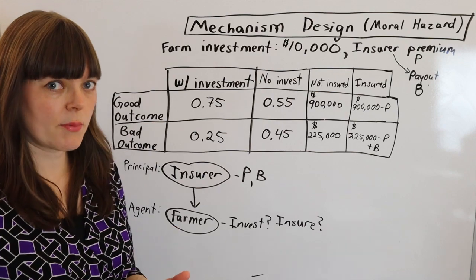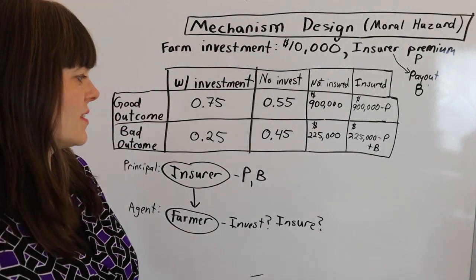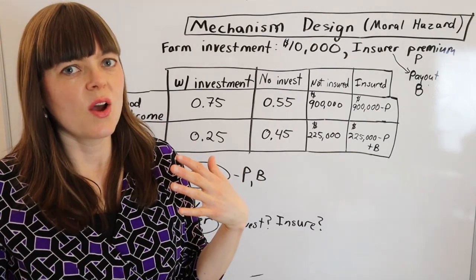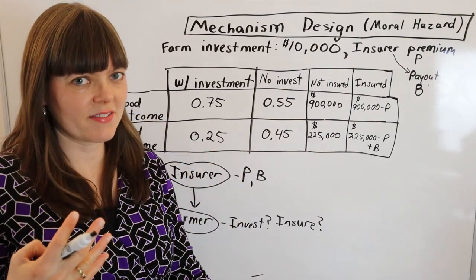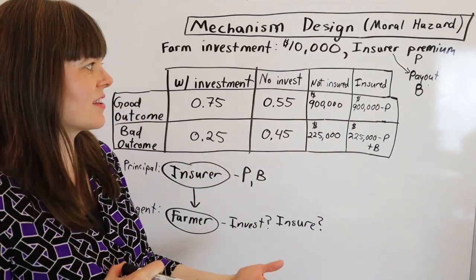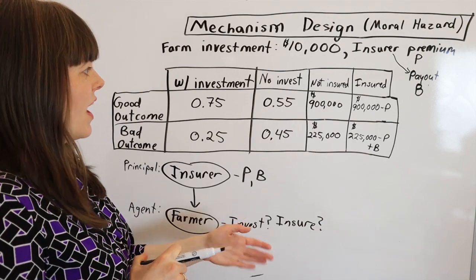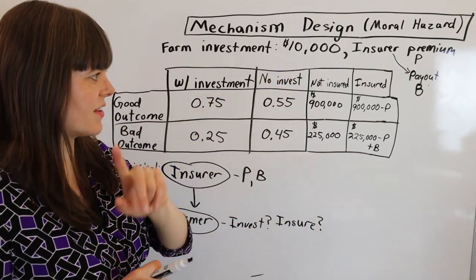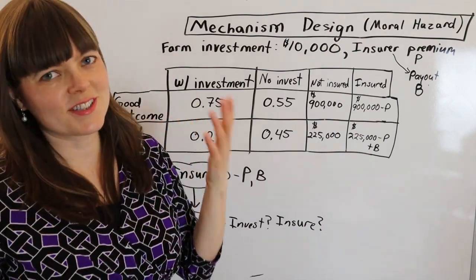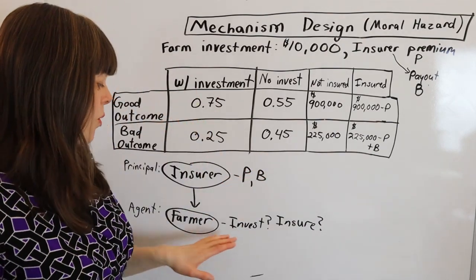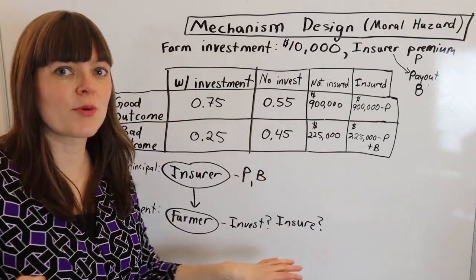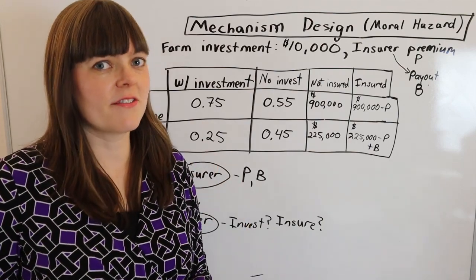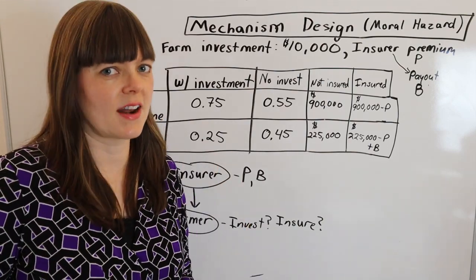Now we want to come up with incentive compatibility constraints and participation constraints. The incentive compatibility constraints are trying to incentivize good behavior — investing in the technology. The participation constraints ensure the farmer buys our insurance. Let's write up the generic version of those two types of constraints.